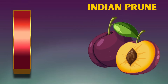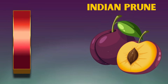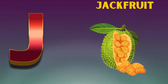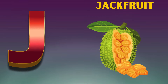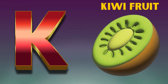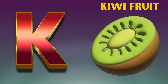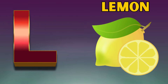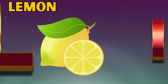I is for Indian prune, e-e-e Indian prune. J is for jackfruit, j-j-jackfruit. K is for kiwifruit, k-k-kiwifruit. L is for lemon, l-l-lemon.